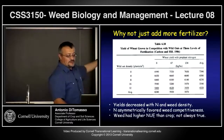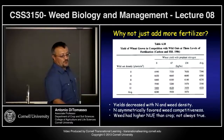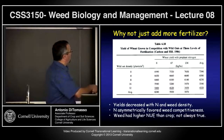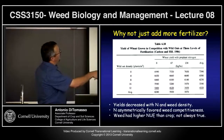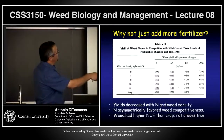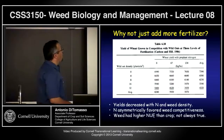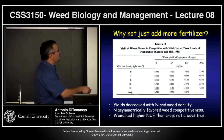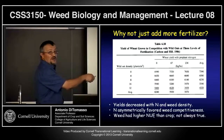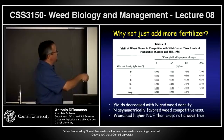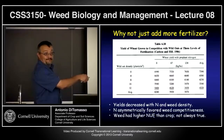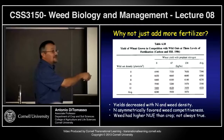Summary: yields decrease with nitrogen application when wild oat density is present. Both density and fertilizer level work against you. In some ways, with heavy weeds, you're better off not fertilizing. You've spent all this money on fertilizer and you've got major weeds — the worst-case scenario is the lowest yield point.